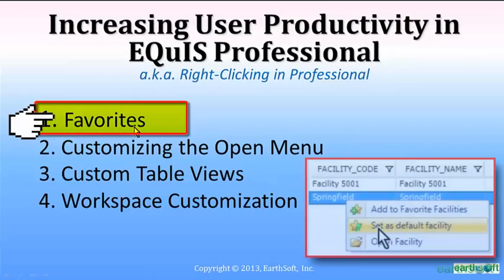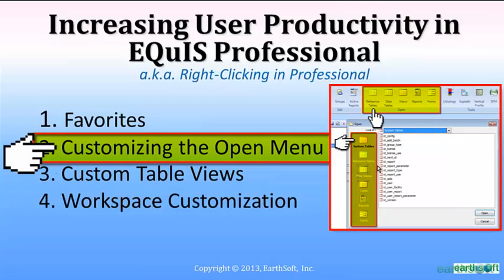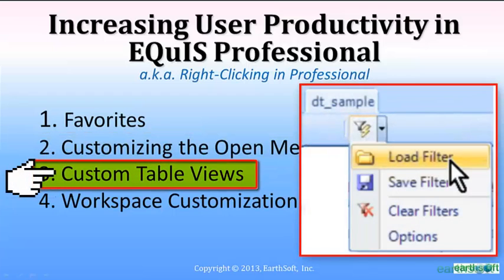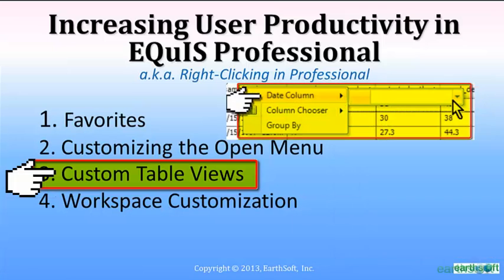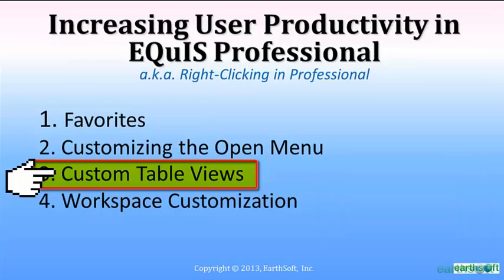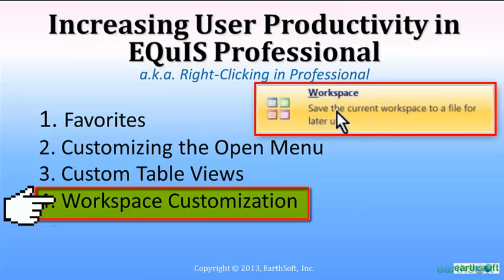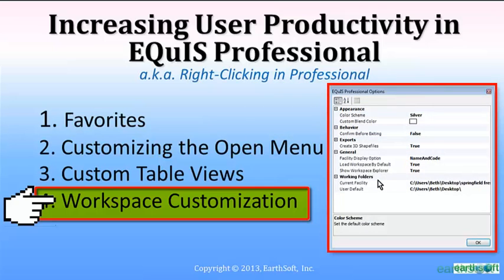Today, the first thing we're going to look at is favorites — both in the connection screen and the login screen — and in ECWIS Professional, making reports, forms, and tables favorites. We're going to look at the open menu, creating report groups, looking at different ways to access things in the open menu, table views, setting your filters, pins, column choosers, and ways to sort and keep only the data you want to see. And then finally, we'll look at workspace customization, which will help you maximize your workspace — especially nice for those of you with small laptop screens or tablets out in the field.